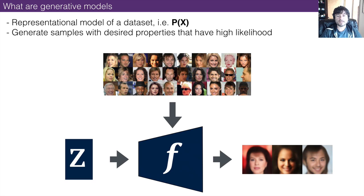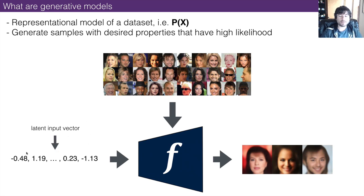Generative models are neural networks that learn how to represent a particular type of dataset — let's say images — and then learn to create new images that resemble the original dataset. So if you have a dataset of faces, you can train a generative model to produce new faces that look like they came from that original dataset. The structure typically involves a latent input vector, sometimes labeled Z by convention, which is a string of random numbers input into the generator of the neural network to synthesize images.